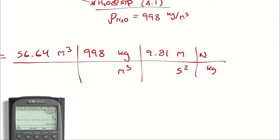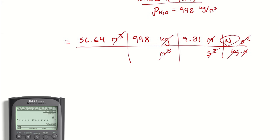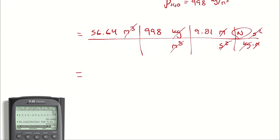A newton is defined as a kilogram meter per second squared. All units cancel, leaving me with newtons. That quantity is 574,110 newtons or 574.110 kilonewtons.